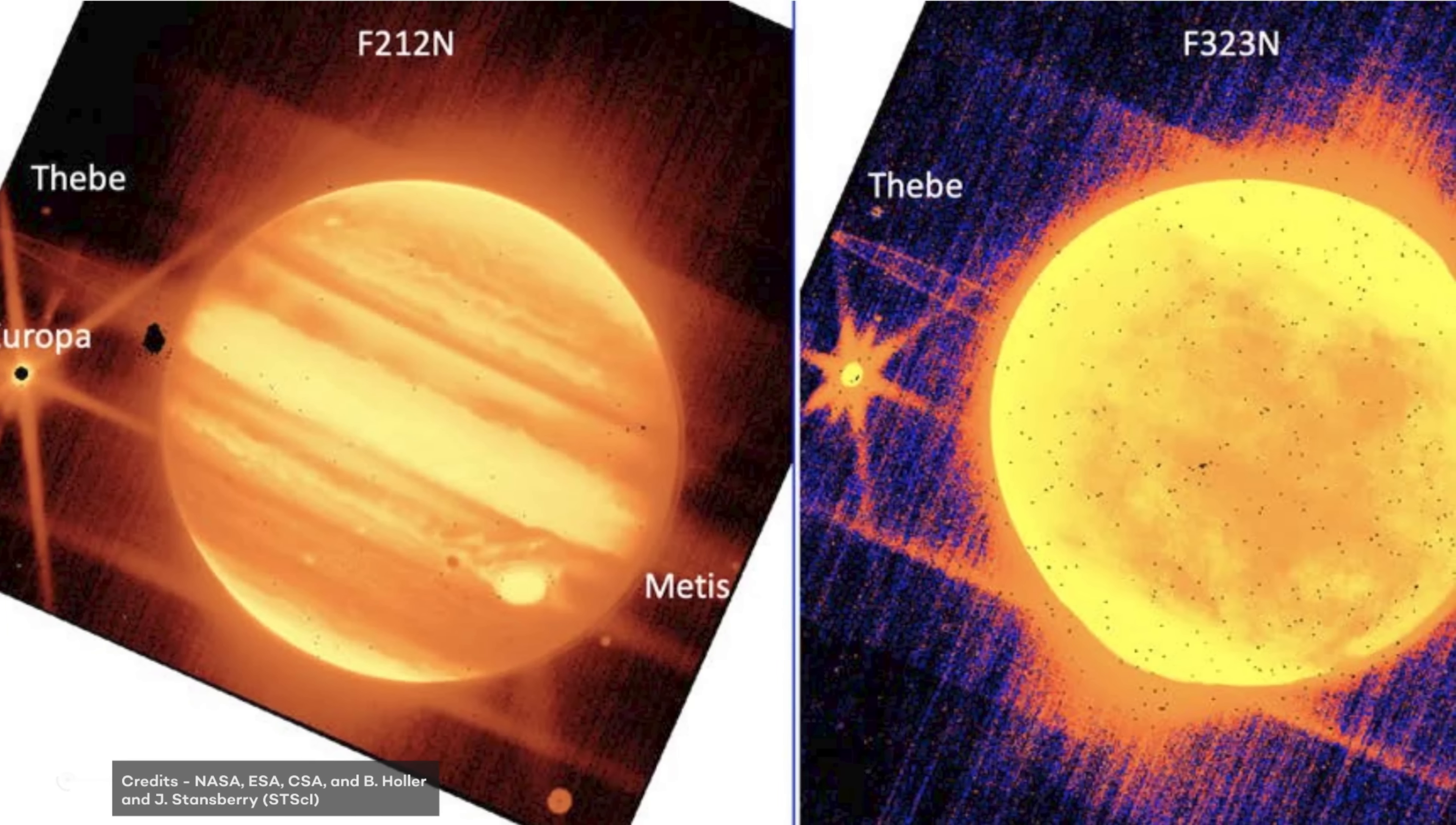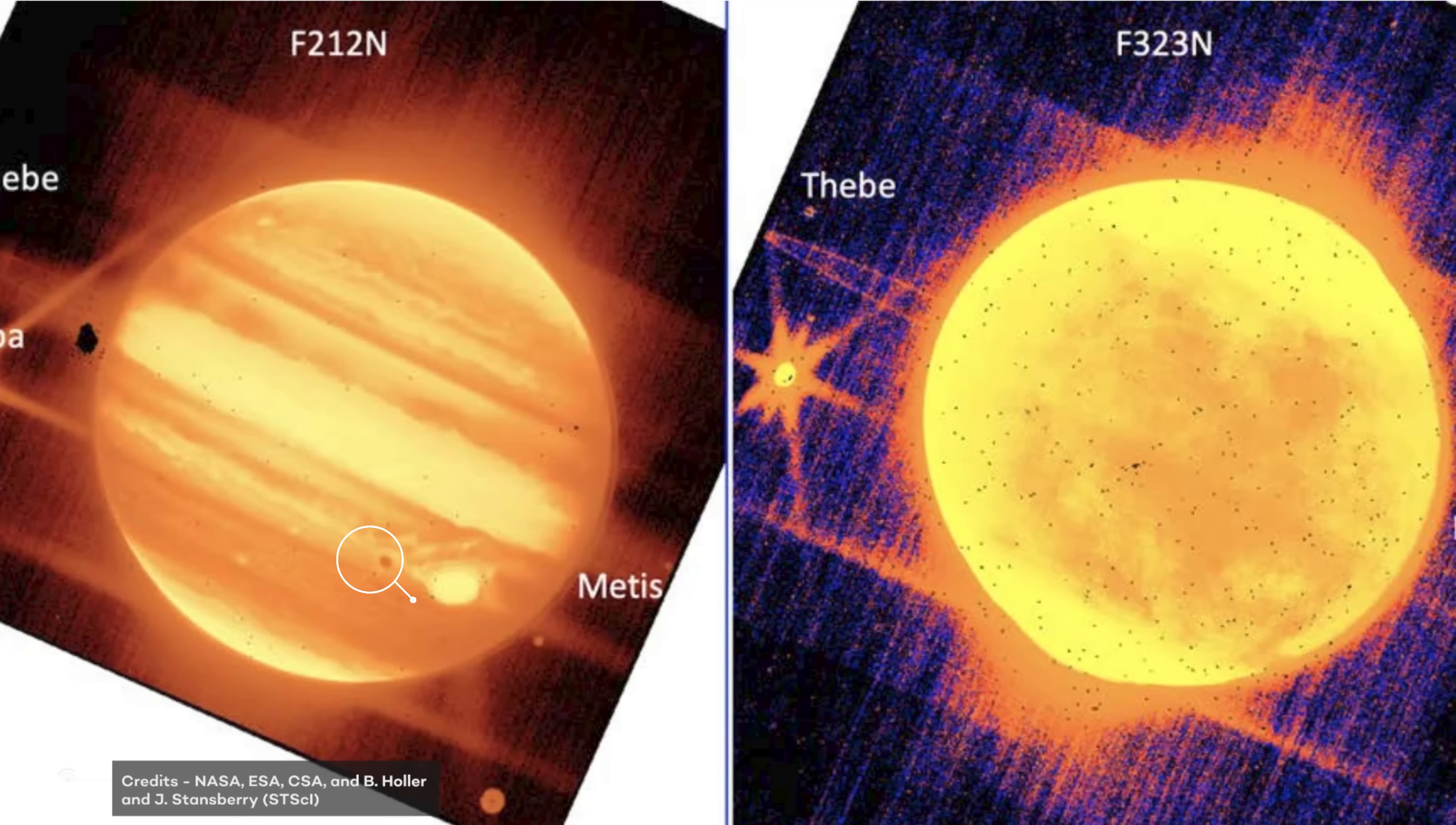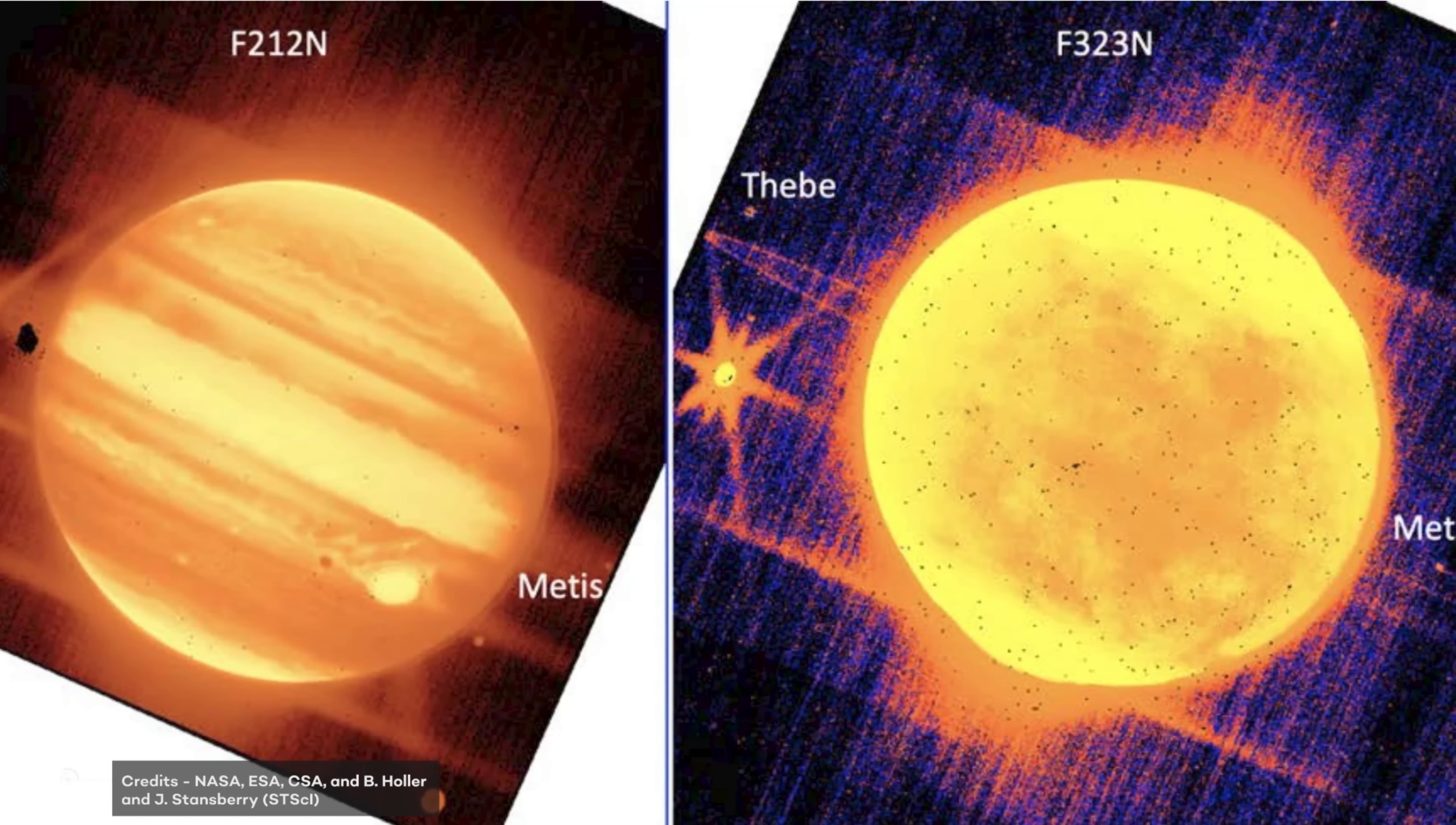When the Near Cam instrument's 2.12 micron filter was used, the resulting image showed the Jovian moons Europa, Thebe, Metis, and even Europa's shadow near the Great Red Spot. This new view of Jupiter provides valuable information about the planet's atmosphere and how it interacts with its moons.